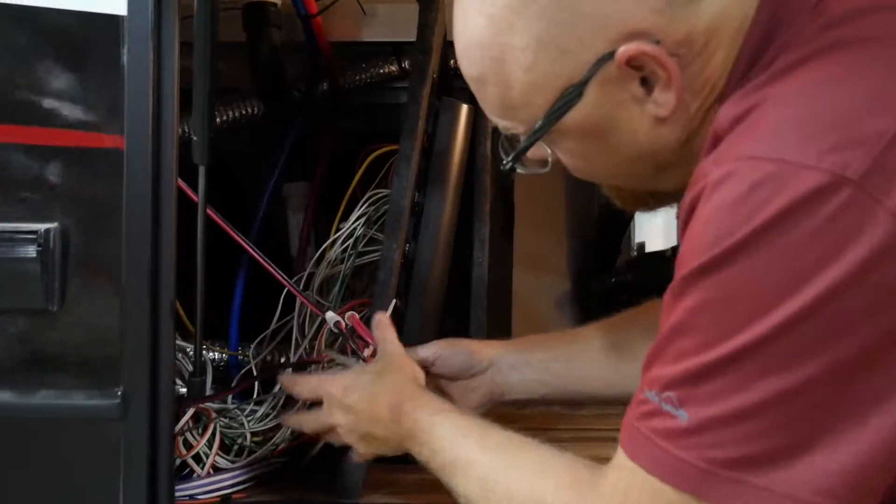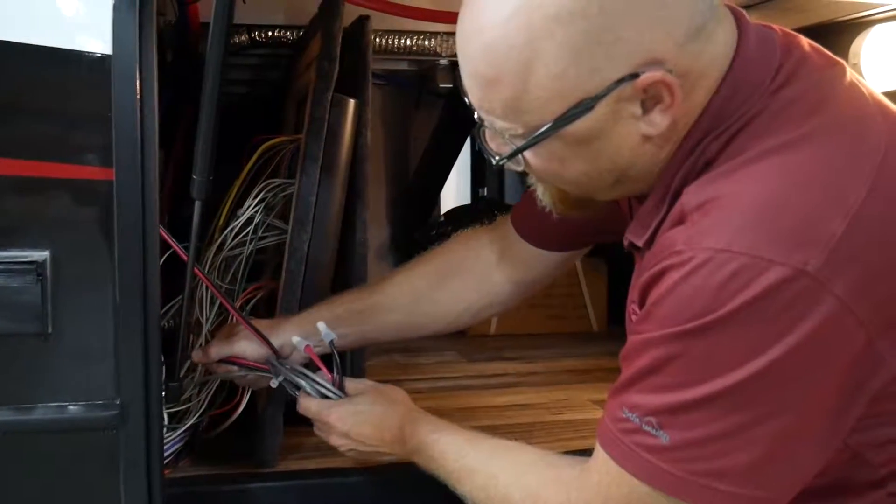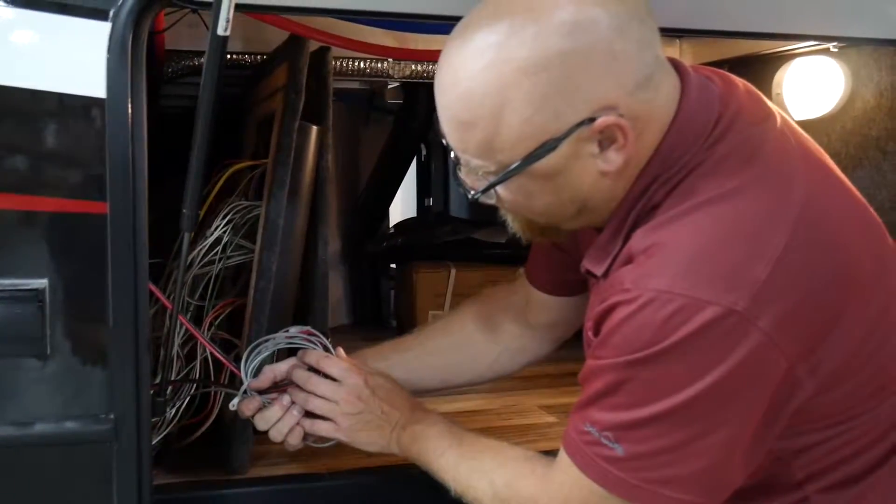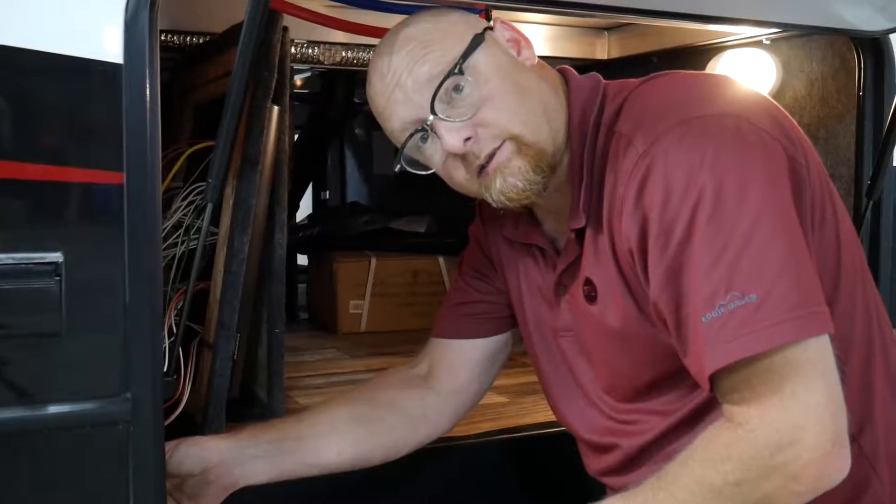This includes one set of wires for the solar panel, one set of wires to the battery, and then your remote cable. Now that we've located our wire bundle, we're going to disconnect the battery.